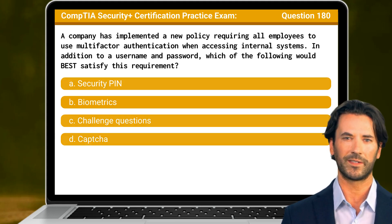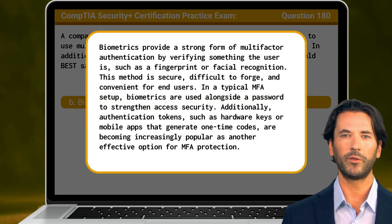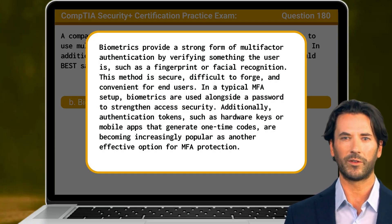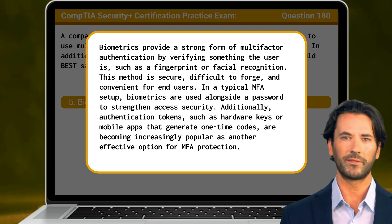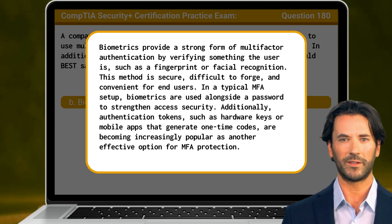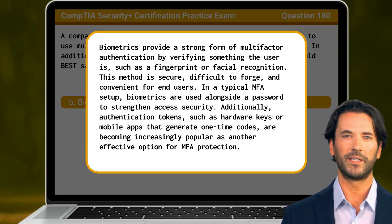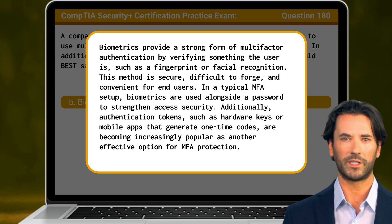The answer is B. Biometrics. Biometrics provide a strong form of multi-factor authentication by verifying something the user is, such as a fingerprint or facial recognition. This method is secure, difficult to forge, and convenient for end-users. In a typical MFA setup, biometrics are used alongside a password to strengthen access security. Additionally, authentication tokens, such as hardware keys or mobile apps that generate one-time codes, are becoming increasingly popular as another effective option for MFA protection.